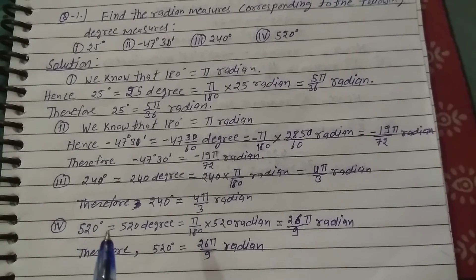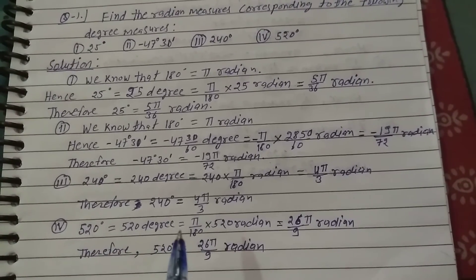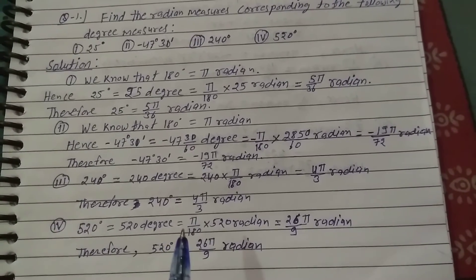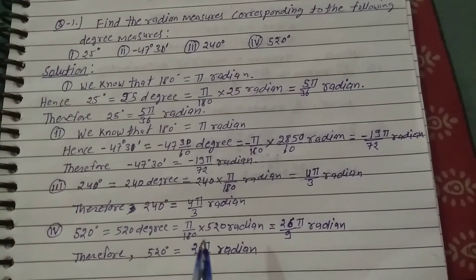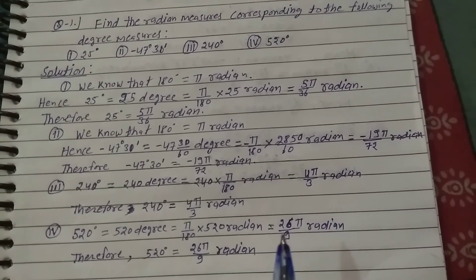Fourth: 520 degrees. To convert to radians, multiply by π/180. So 520° × π/180 radians equals...